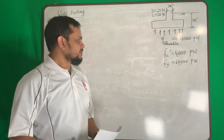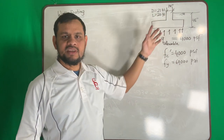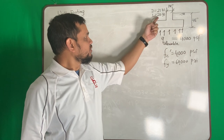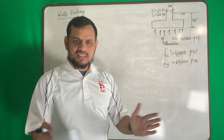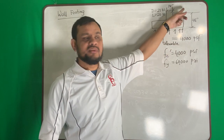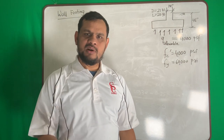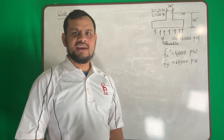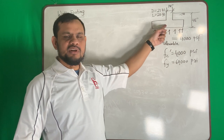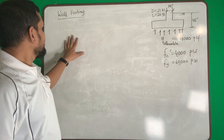We will see an example for wall footing design. The given data: dead load 21 kip per feet, live load 20 kip per feet, wall thickness 14 inches, bottom of foundation 48 inches from the surface, allowable soil pressure 400 PSF, concrete strength 4000 PSI, and steel strength 60,000 PSI.